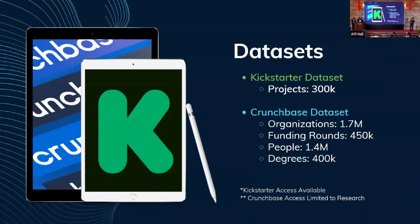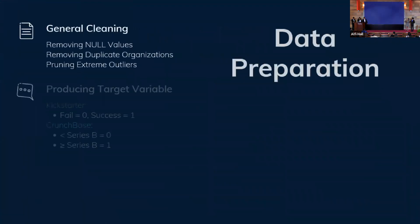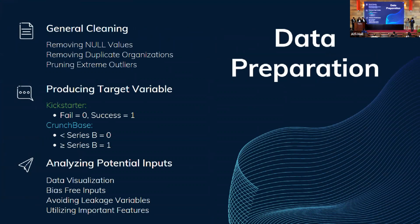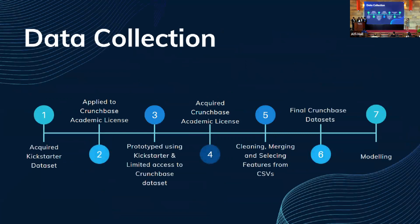While the Kickstarter dataset was free and easy to download, the Crunchbase dataset required a license and took some time to get approval. Early in Thesis 1 we acquired the Kickstarter dataset and started working on it. We applied for the Crunchbase academic license but went through a lot of back and forth with their team, so we started prototyping using Kickstarter and whatever limited Crunchbase access we had. We were fortunate to acquire the academic license by the end of the first semester, and then moved on to cleaning, merging, and selecting features from the CSVs to reach our final two datasets, and then proceeded to modeling.